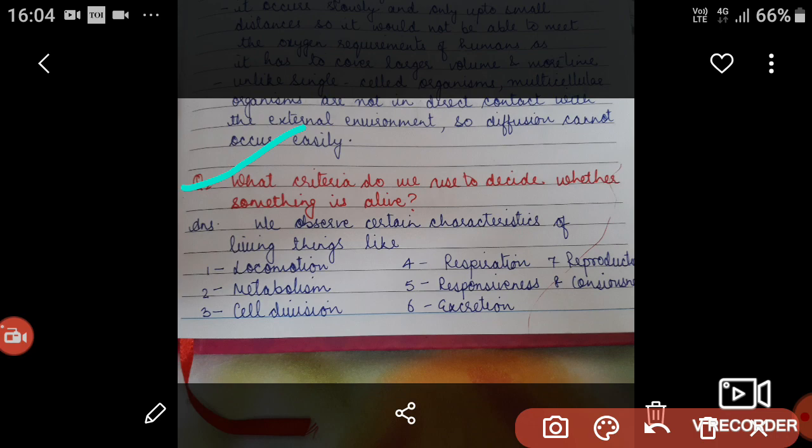If something has locomotion, that is it can move from one place to another, we can say that this thing is alive. If that thing is having metabolism going on in the body, that means that thing is alive. If that thing is going for cell division, we can say that this thing is alive.